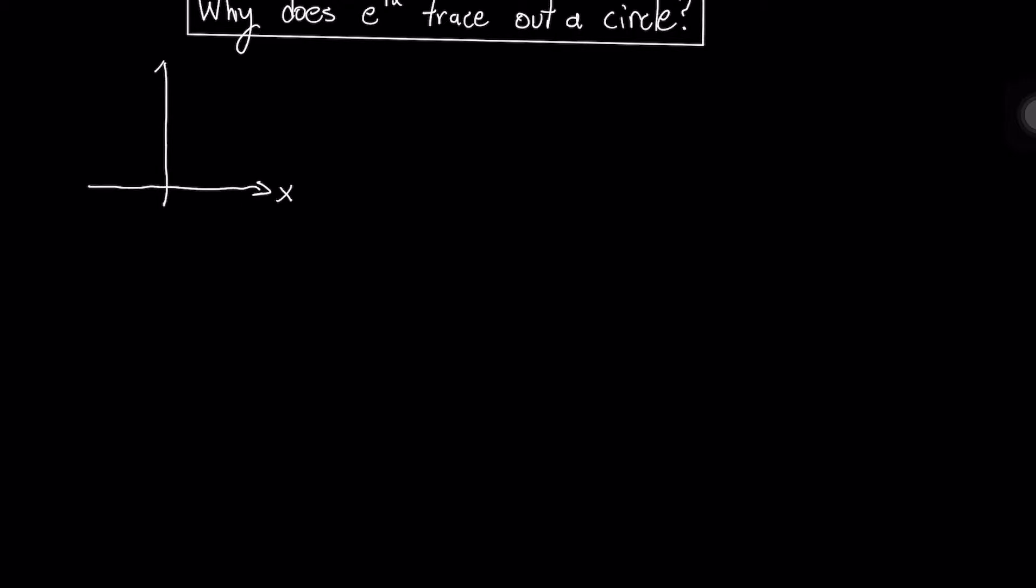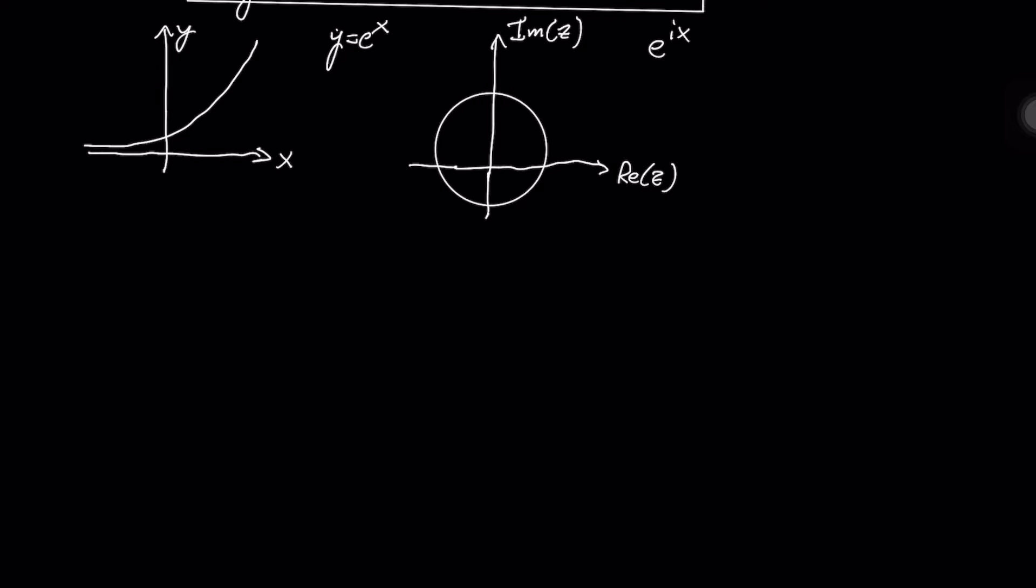So in the normal x, y coordinates, the function y equals e to the x has a very predictable exponential shape. However, in the complex plane where we have the real part and the imaginary part, the function e to the ix traces out a circle, which has incredible implications when you're doing Fourier transforms and has many applications.